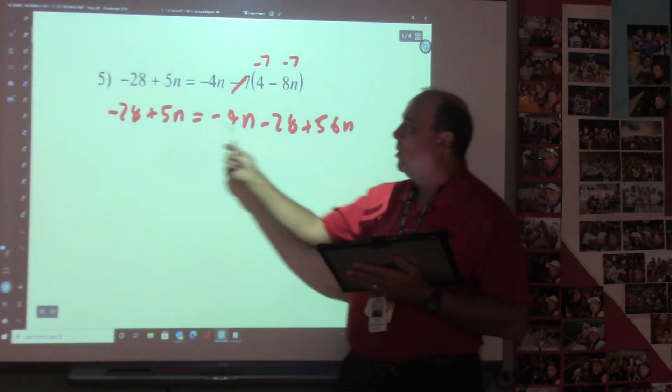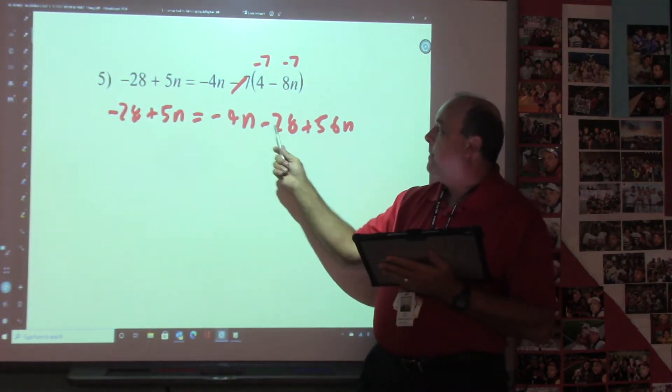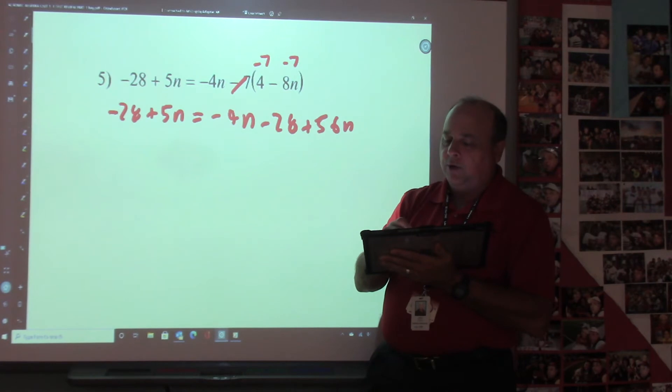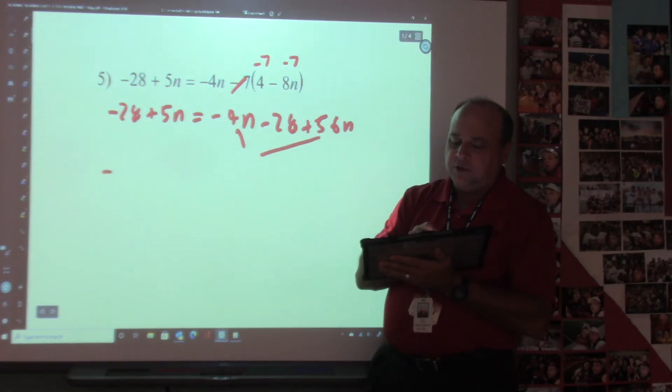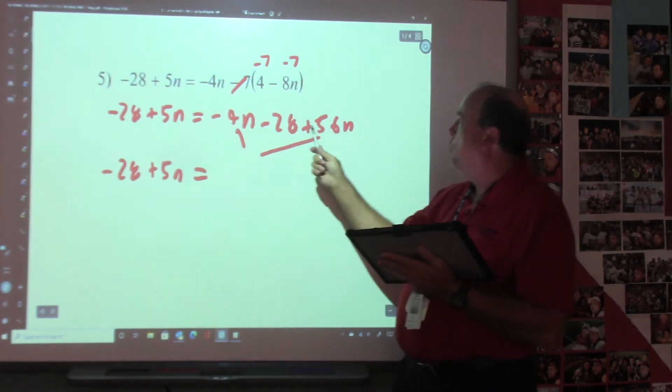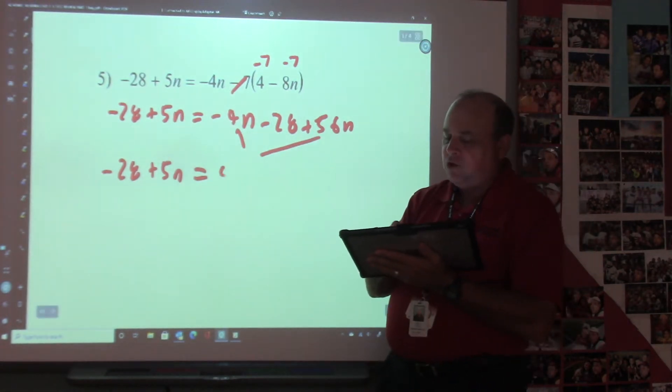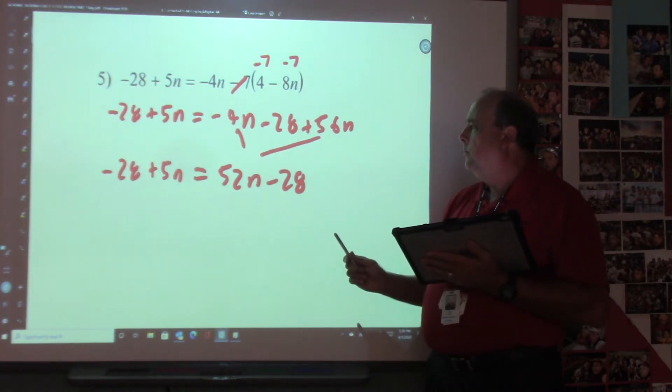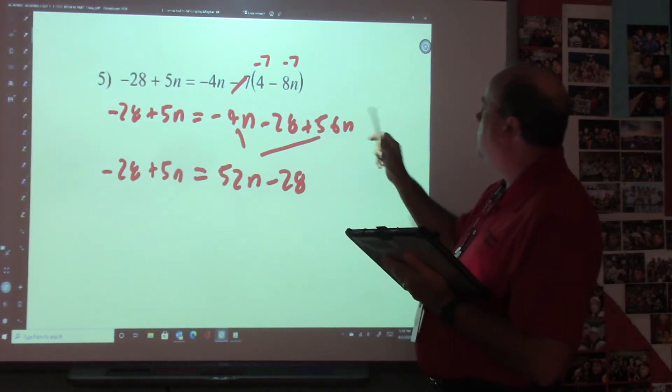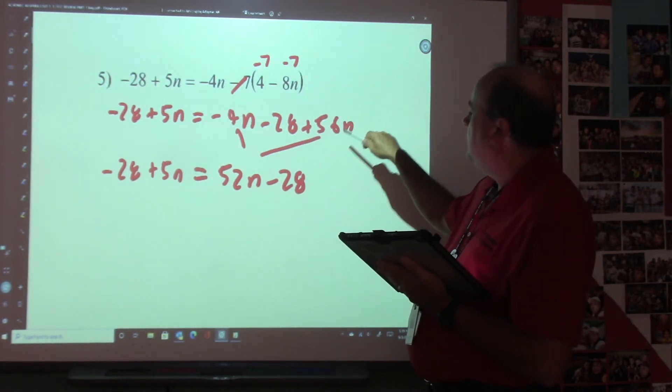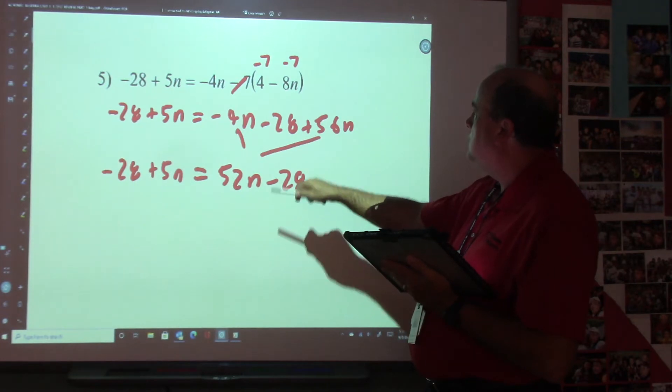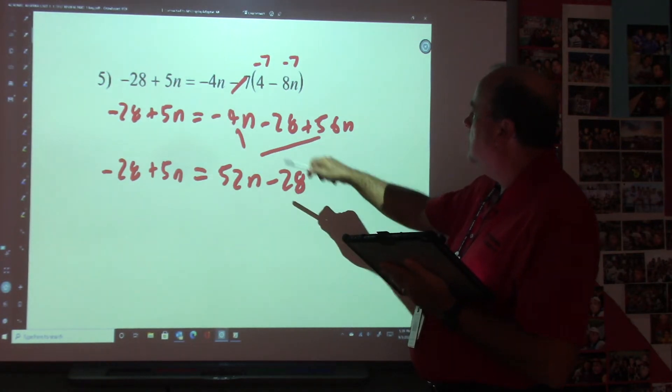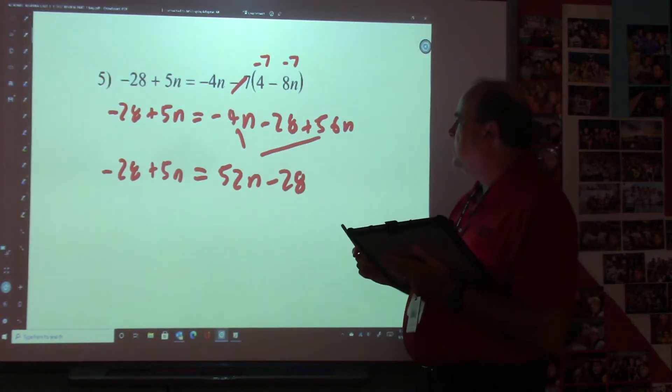So we're right here. Now then, I can't combine this yet because I have two letters over here. So I need to group these letters together. So -28 + 5n equals -4 + 56 is 52n - 28. I'll do that right. -4n + 56. 56 - 4 is 52. I have -28 and -28 + 5n. That is correct.